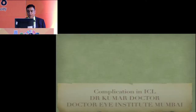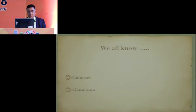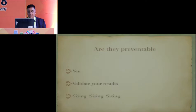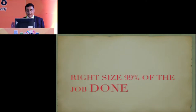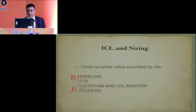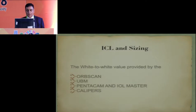Coming to ICL — what are the complications? Yes, there is cataract and glaucoma, but this all has to do with sizing. Sizing is 99% of the job — if you have the right sizing, your job is done well. Sizing can be done by Opscan, UBM, Pentacam, IL Master, or caliper, depending on what you have. The most important measurement is white-to-white. If you have an Opscan, even the ICL company follows that — the Star ICL. Be careful if there is a pterygium or a pigmented area on the cornea, as there can be discrepancies between different devices.